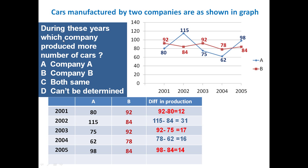The next question is: during these five years, which company produced more cars? Company A produced 80, 115, 75, 60, and 98 cars, totaling 430. Company B produced 92, 84, 92, 78, and 84 cars, also totaling 430. It means both companies produced the same number of cars.